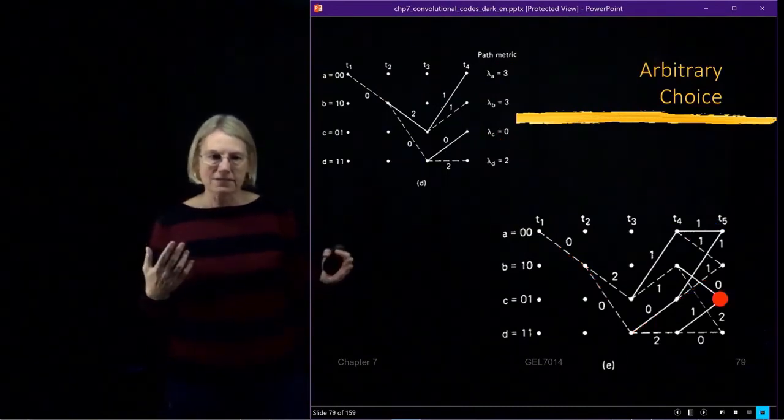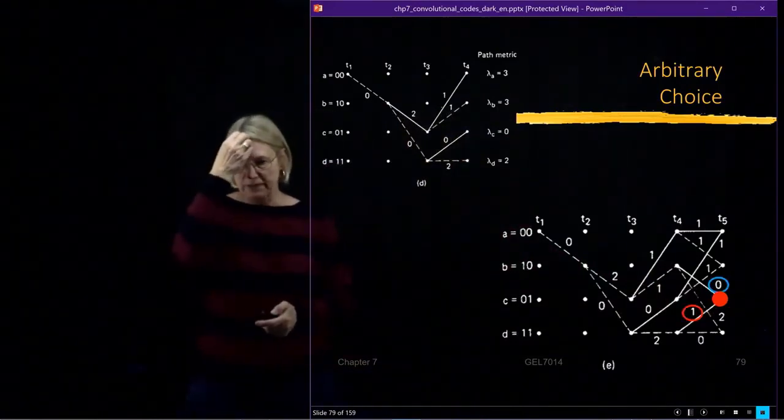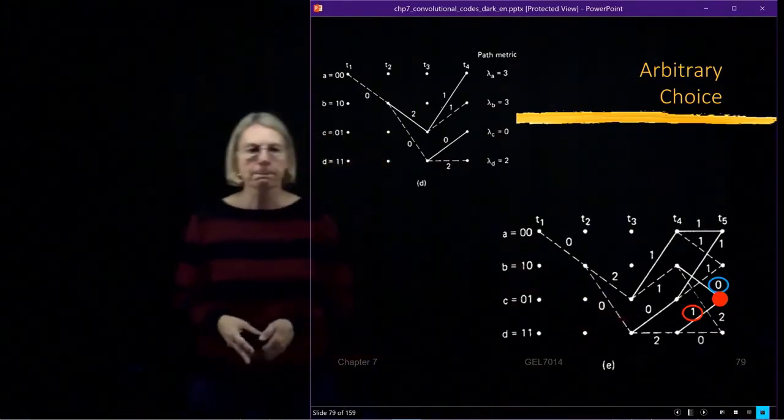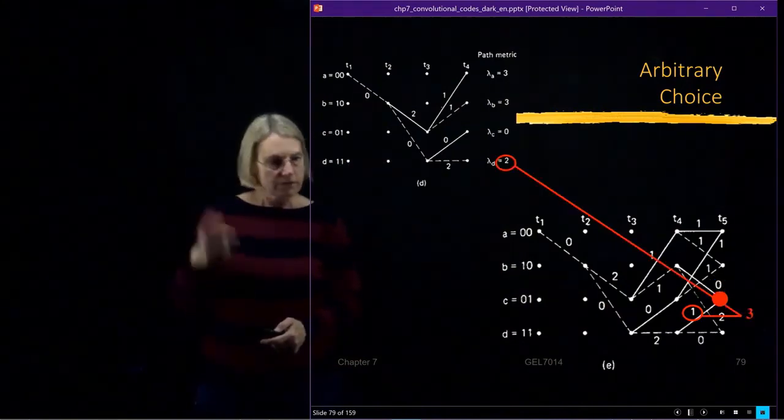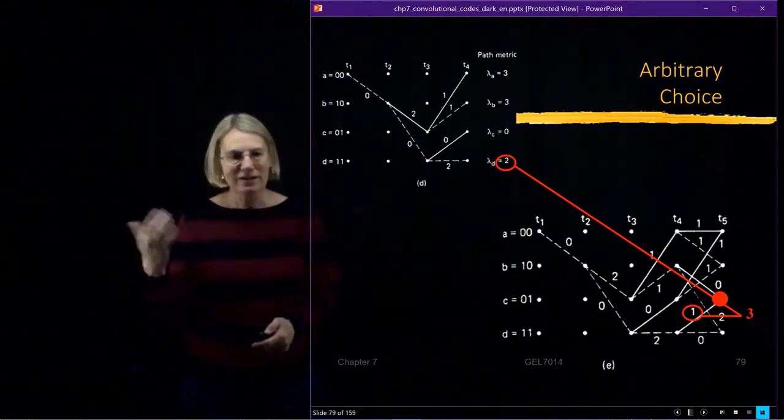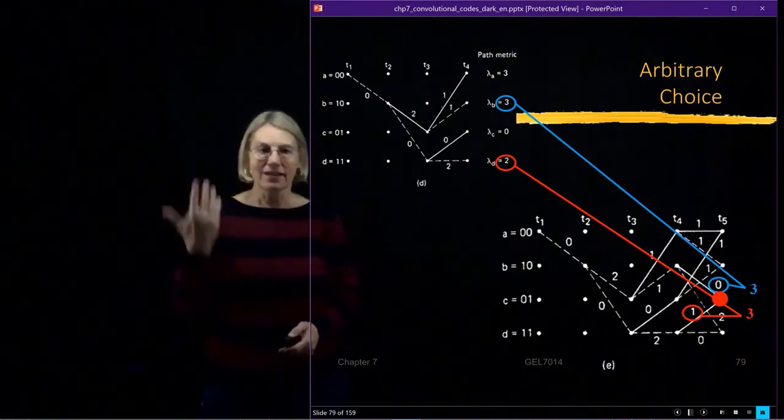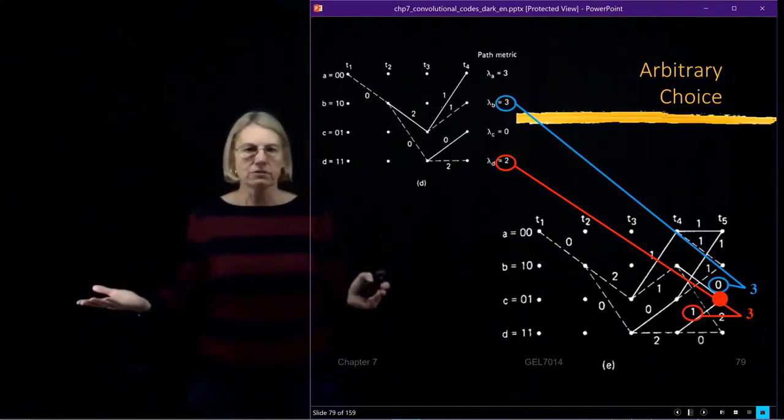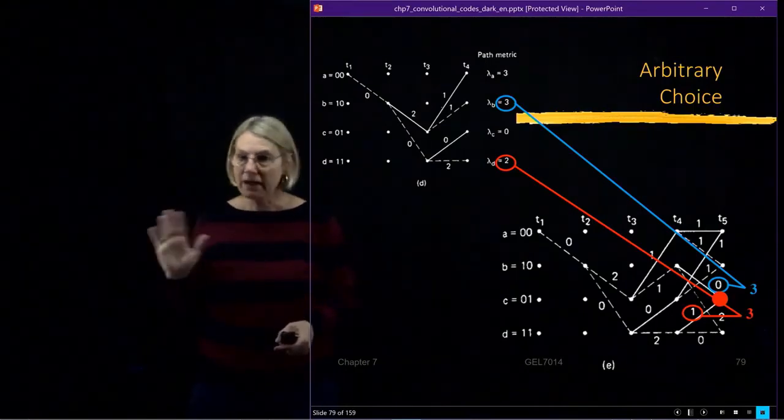Now let's look what happens on this particular example when we're looking at state C at time 5. And at state C, we have two possibilities. The upper path has a branch metric of 0. The lower path has a branch metric of 1. And the upper path came from state B. The lower path came from state D. And it had a length of 2. And I'm adding 1 to it, it gives me 3. If I look at the upper path, it came from state B. And that had a length of 3. And now I add 0 as my branch metric. I get 3. 3 and 3. Okay, now what do I do? Well, they're both the same. Which one do I keep? Completely arbitrary choice. Take a coin and flip it. Doesn't matter.